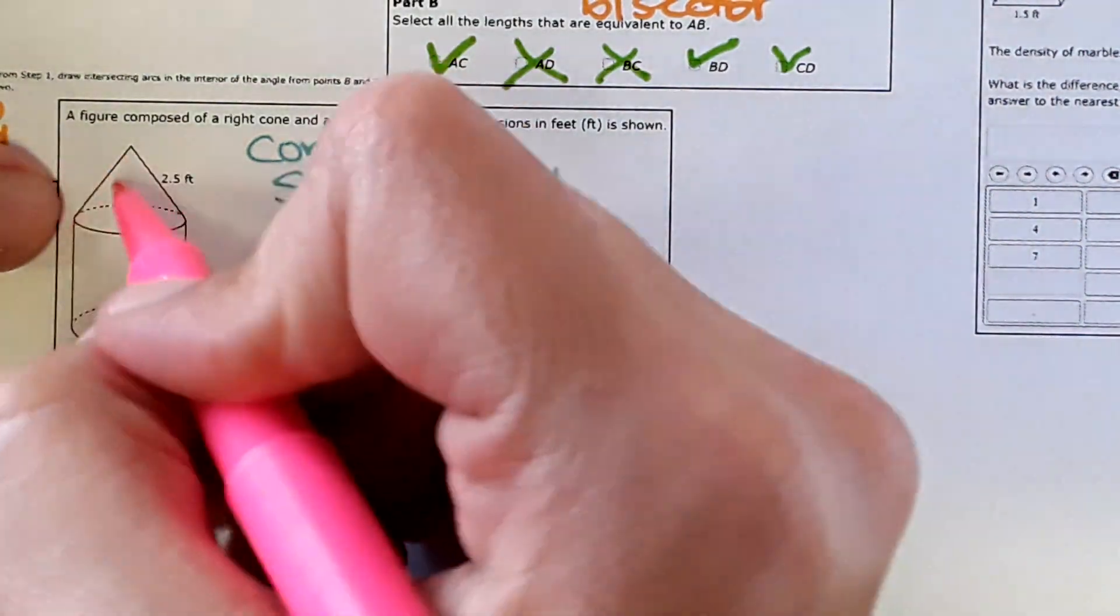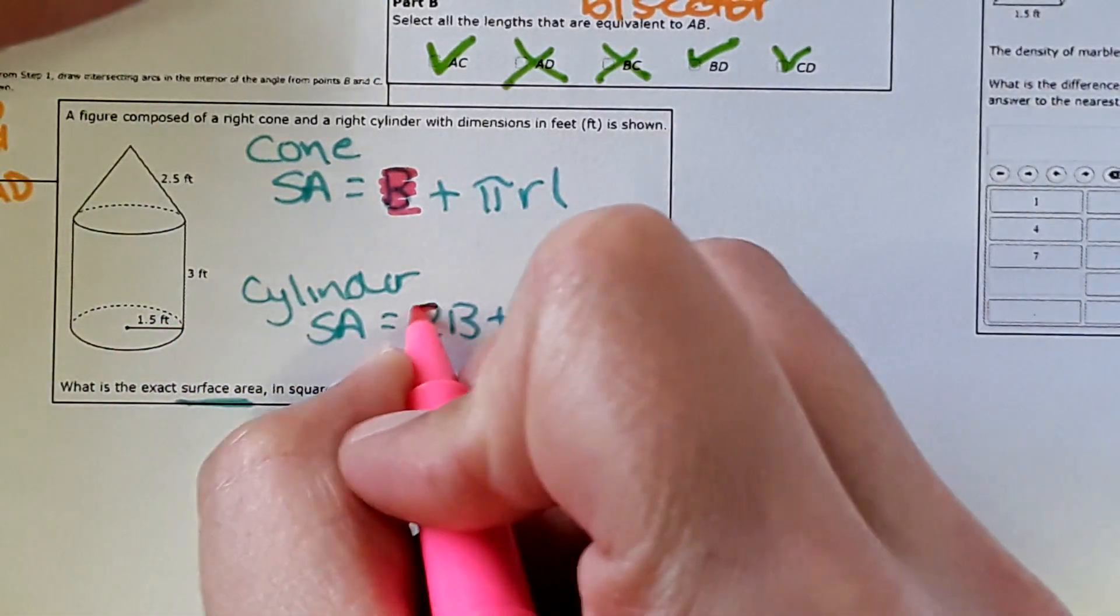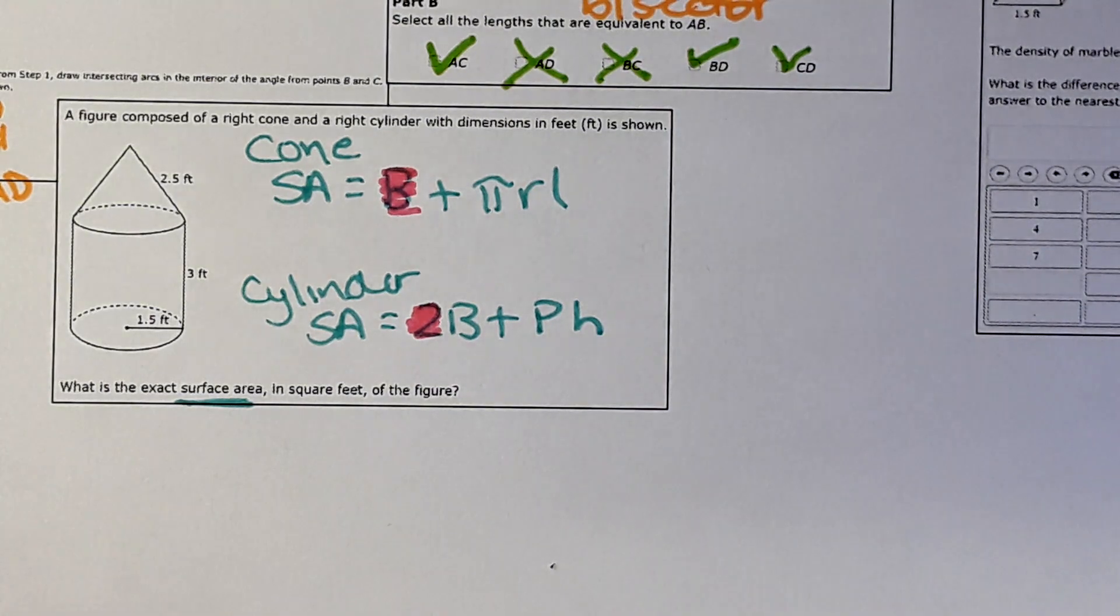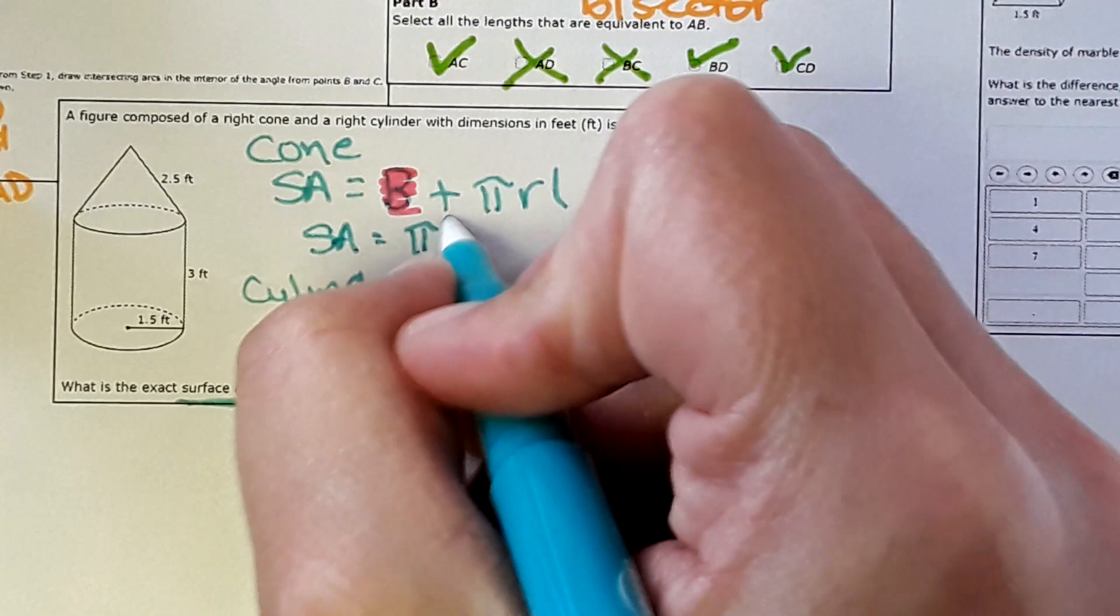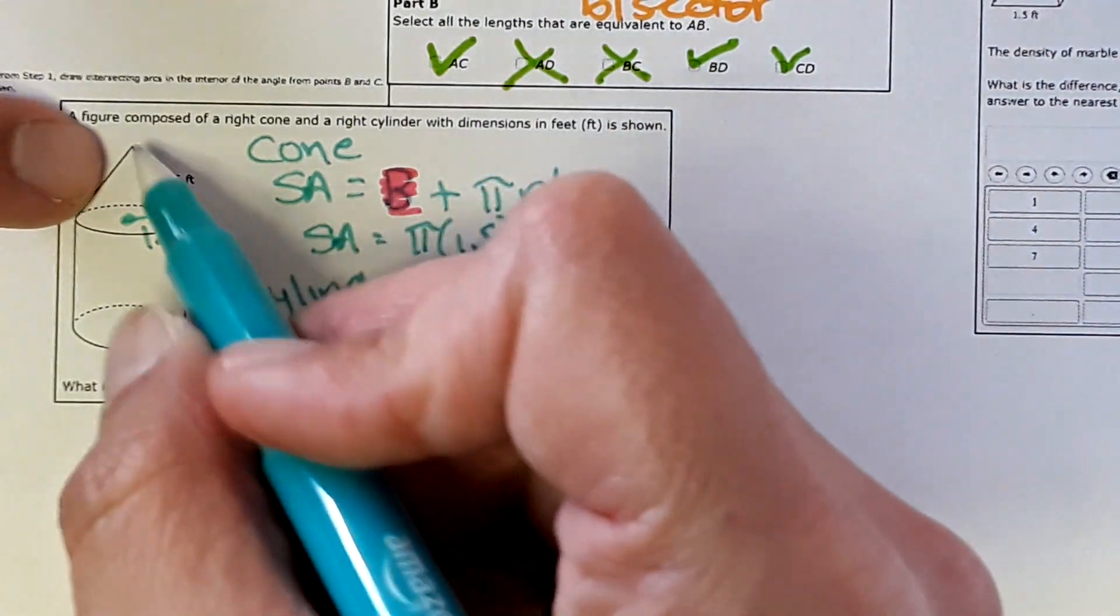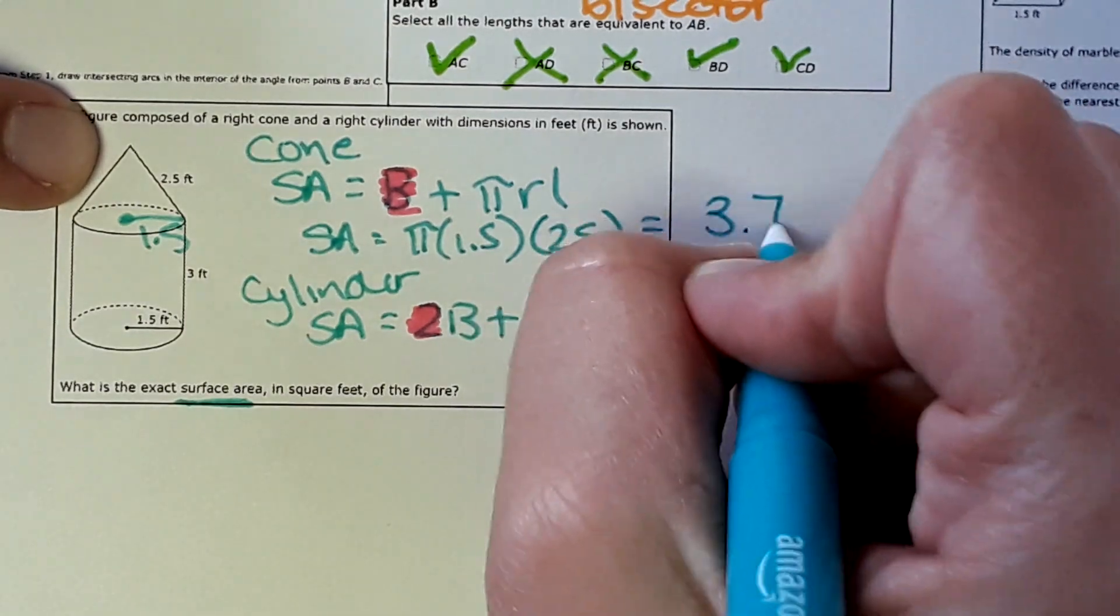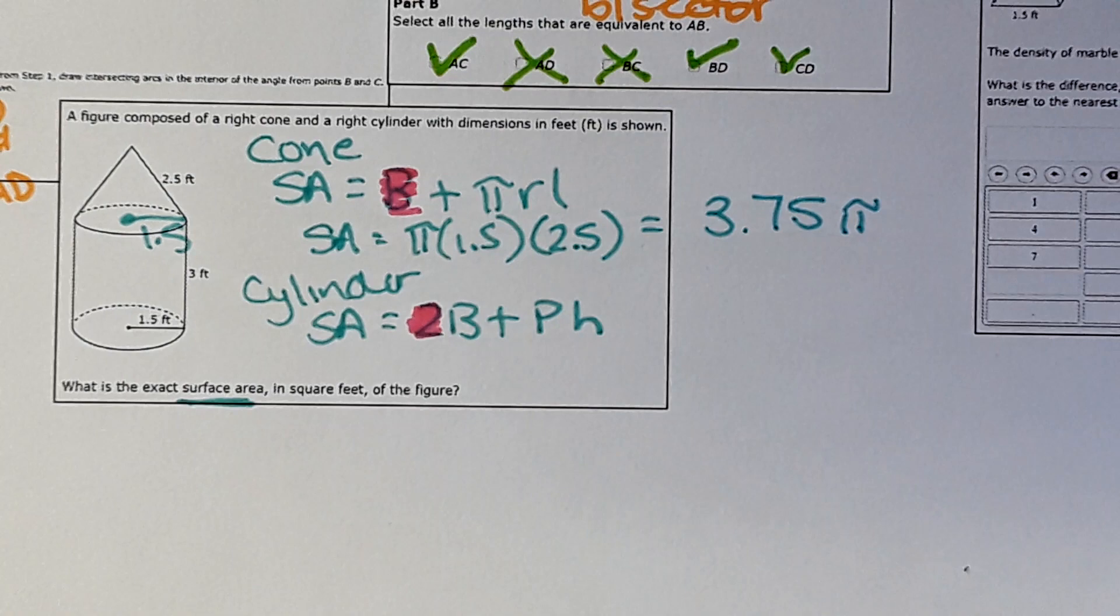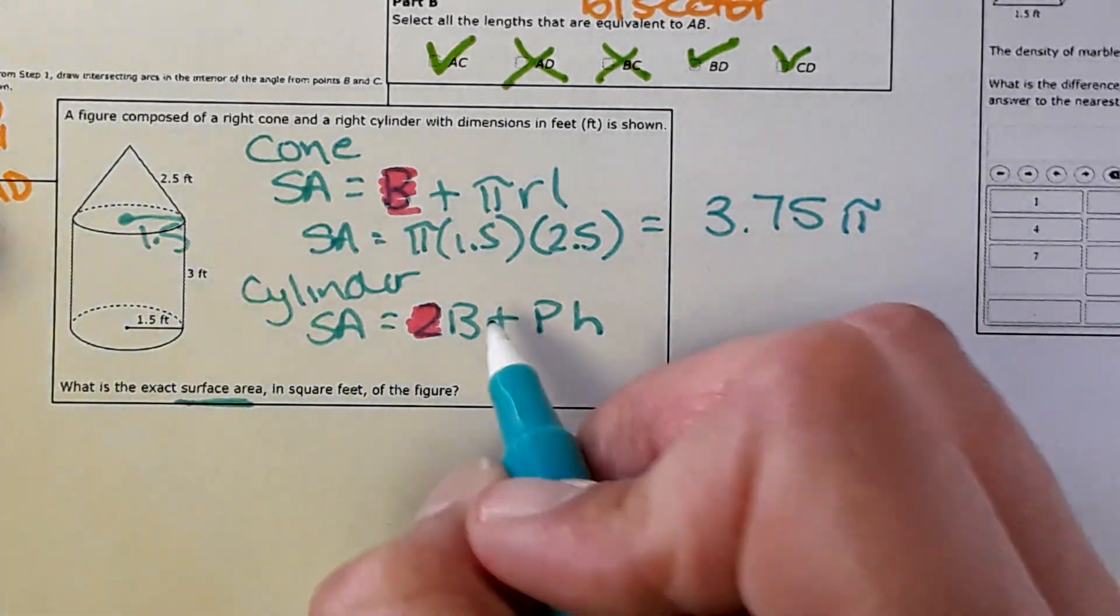Considering this exact picture, the cone here doesn't have a base that's on the outside that would be considered part of the surface area, so just take this part out of the equation. We're just going to find the lateral surface area of the cone. Then for the cylinder, we only have one base that's on the outside, so just take away the two because it's only going to be one base. Then we're going to plug numbers into the equation. Surface area is π, the radius would be 1.5, and this slant height is 2.5. This comes out to 3.75π for the surface area of the top part.